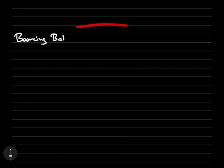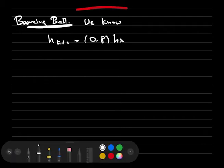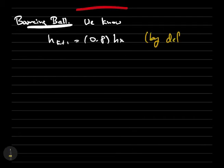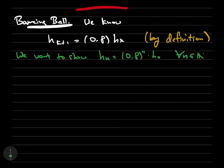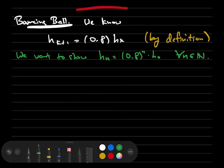Okay, let's do some proofs. We want to show that the height after n bounces is 0.8 to the n times the original height. Recall that by definition, we know that each bounce is 80% of the last, so for any k, we have hk plus 1 is 0.8 times hk. First note that h1 is 0.8 times h0, by definition. This establishes the base case.